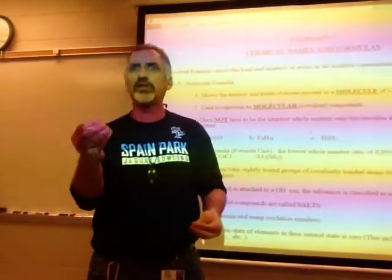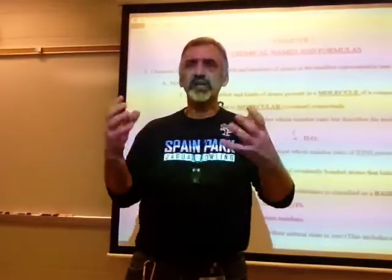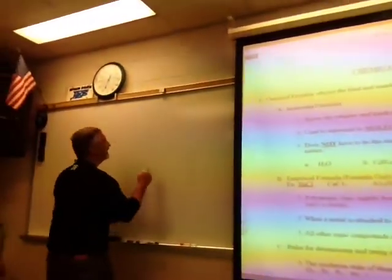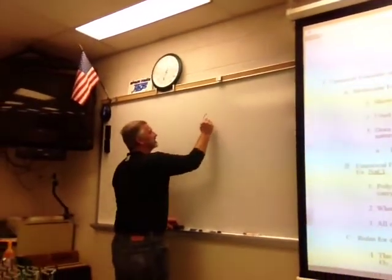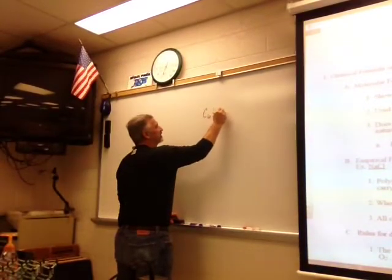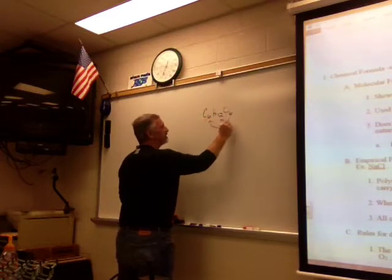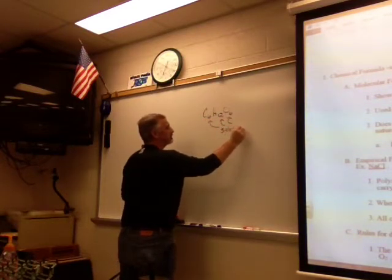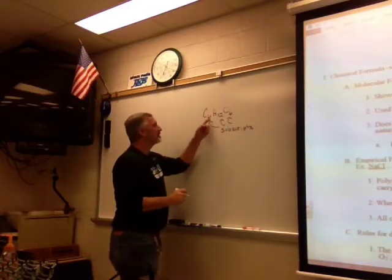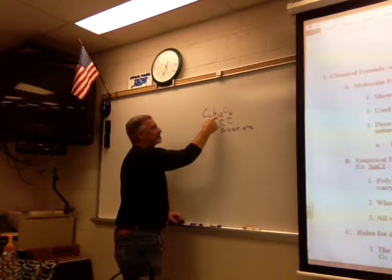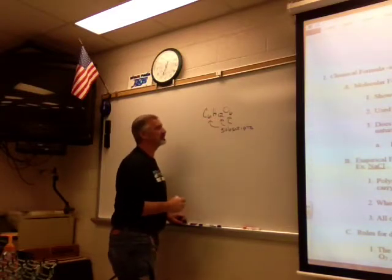C6H12O6 — 6 carbons, 12 hydrogens, 6 oxygens — that's the number of atoms combining together. These smaller numbers are called subscripts, and they tell us the number of atoms in the molecule. We have 6 carbon atoms, 12 hydrogen atoms, and 6 oxygen atoms in each molecule.